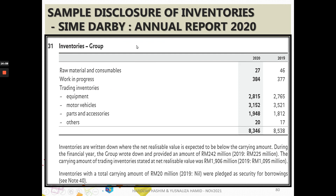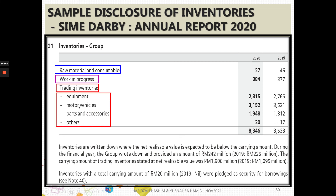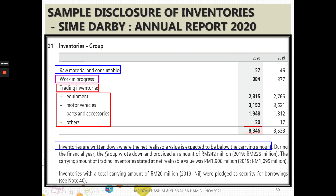A sample disclosure from Sime Darby's annual report of 2020 (shown for educational purposes) shows total inventories of 8,346, with a breakdown comprising raw material and consumables, work-in-progress, trading inventories — indicating Sime Darby's involvement in trading of equipment, motor vehicles, parts and accessories, and others. There are three types of inventory classification shown, and the finished goods or trading inventories include equipment, motor vehicles, and parts and accessories. The notes also disclose write-downs of inventories below carrying amount and amounts stated at net realisable value.